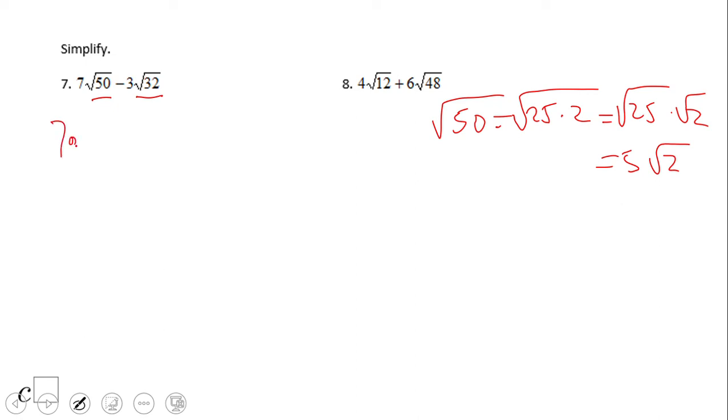So basically that's the thing we're going to do here. We're going to do 7 × 5√2 - 3 times, what about √32? Using the same process, 16 × 2. Now we end up with 4√2.